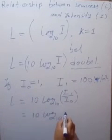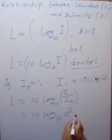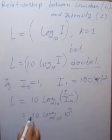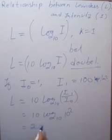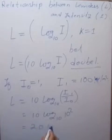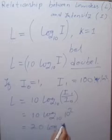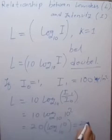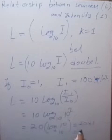So 100 can be written as 10 square. It means now this 2 times 10. This becomes 20. And here we left log of 10 base 10. This value is 1. So this will be equals to 20 into 1 or equal to 20.